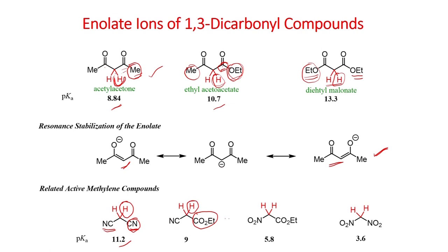If you replace the nitrile further with a nitro group, this is more acidic, because this is a strong electron-withdrawing group; the acidity of this proton is further increased, and the pKa value of this proton is 5.8. When you replace this ester group with the nitro group, the acidity of this proton is further increased, and the pKa value is 3.6.